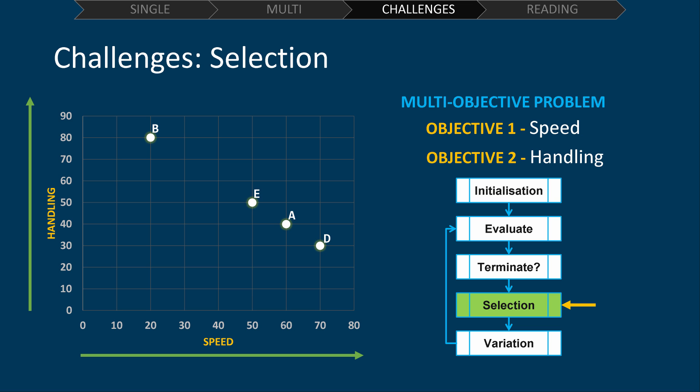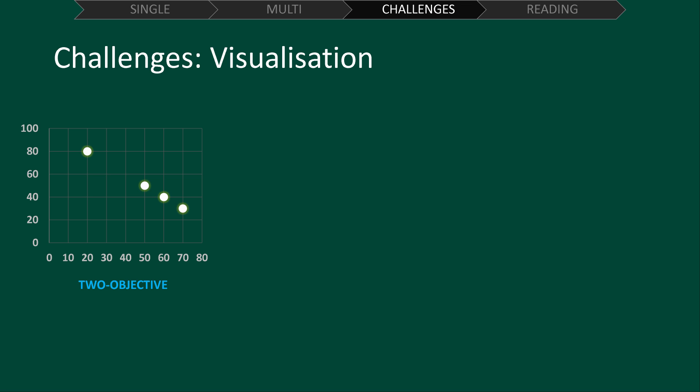In future videos, I'll cover some popular approaches to selection for multi-objective problems. Another challenge for multi-objective problems is how we visualize the objective space. For two objective problems, like the one we just used as an example, we can use a two-dimensional scatterplot. And this makes sense when we look at it. We can see how far a solution is from another and easily see if one dominates another.